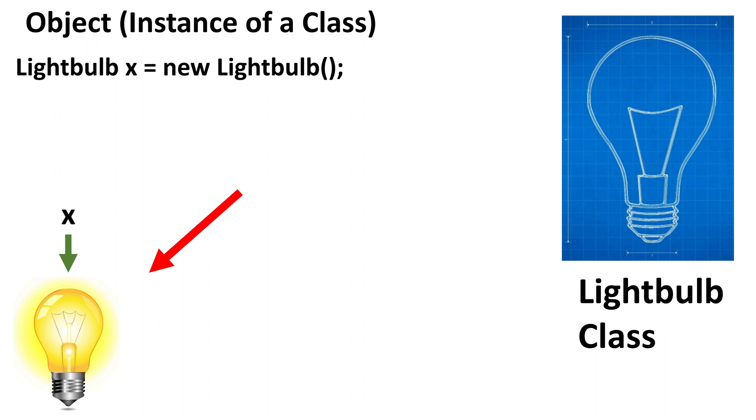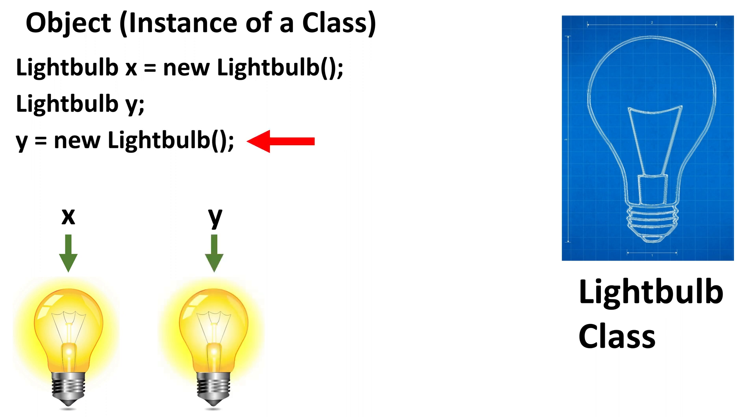Now let's look at another way to declare and initialize a lightbulb object. On this line, we create a lightbulb variable y. On the next line, we create the lightbulb object and tell y to point at that object. We're doing the same thing, but in the second example, we split up the steps. We can't access an object directly, so we need a variable to allow us to identify the object. It's like how people need names so we can identify them.